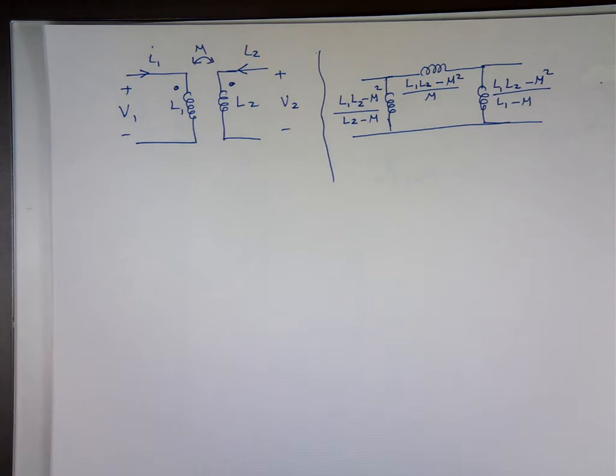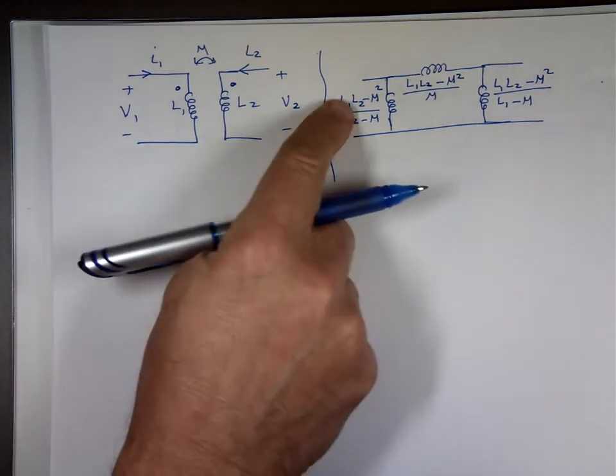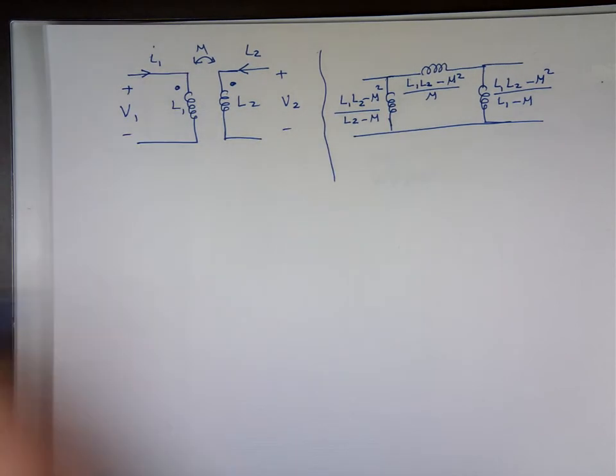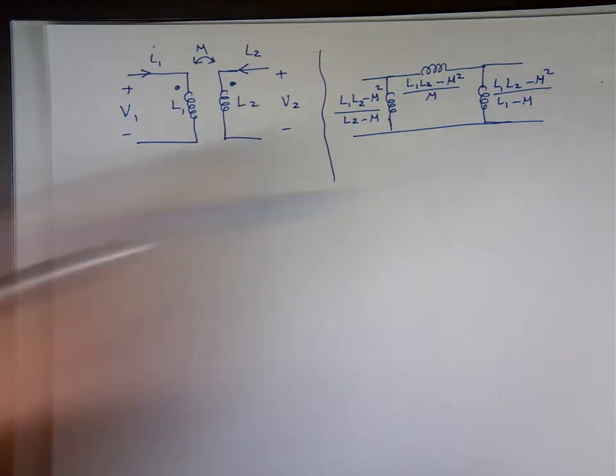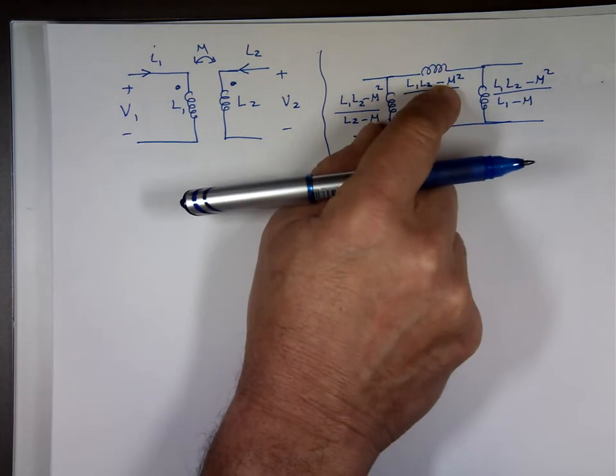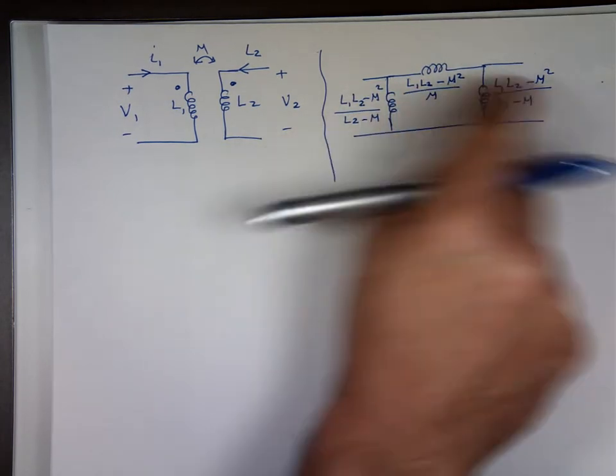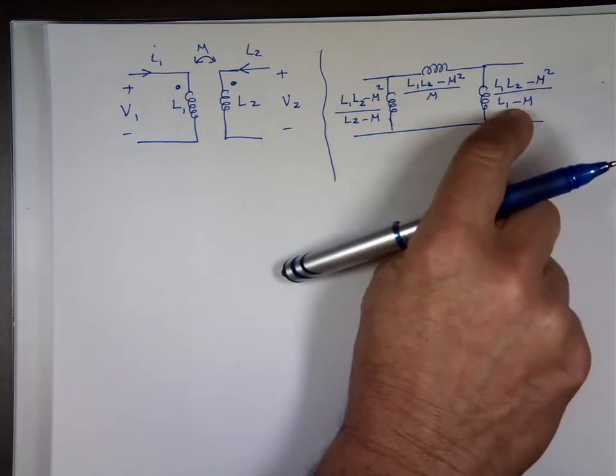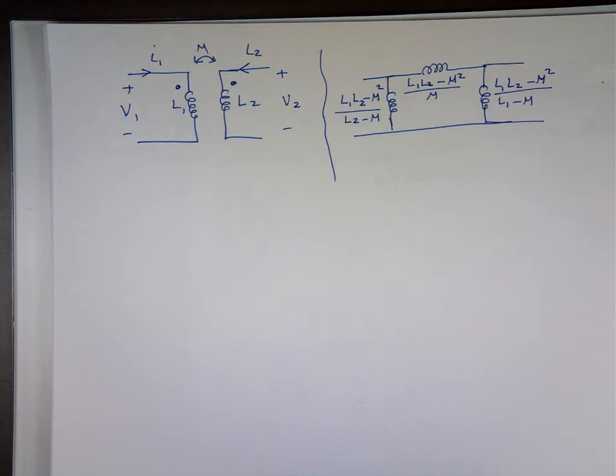So to find the equivalent of that, this will be L1 L2 minus m squared divided by L2 minus m, and this one will be L1 L2 minus m squared. The top is always the same for all of them, but this is divided by m and this is divided by L1 minus m. You may end up with a negative value.